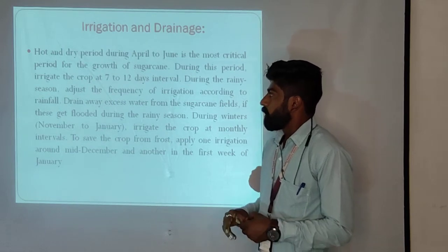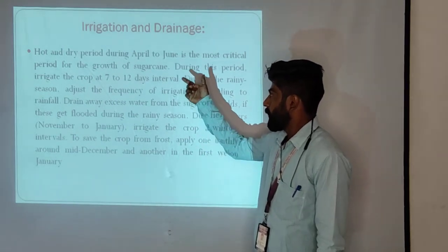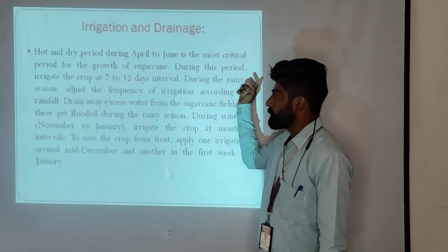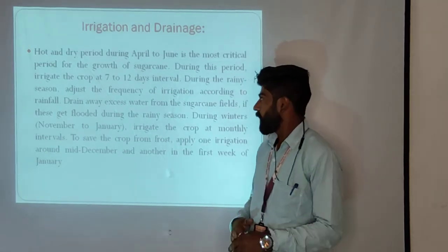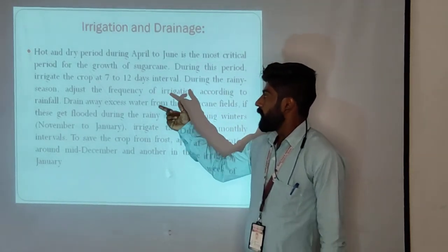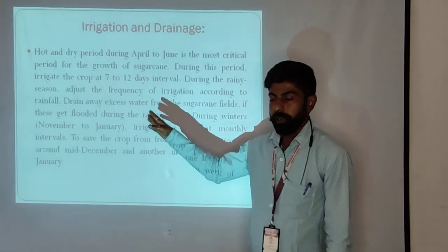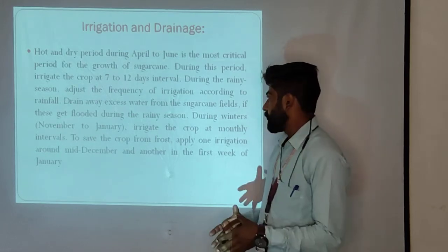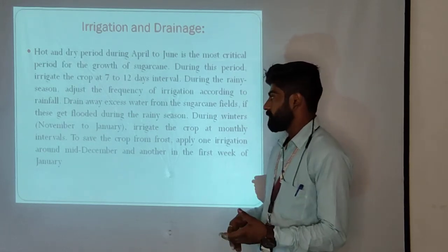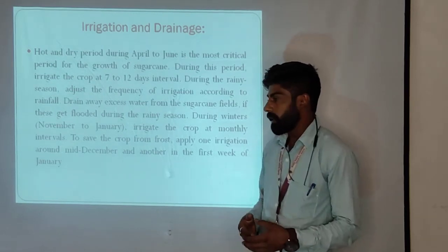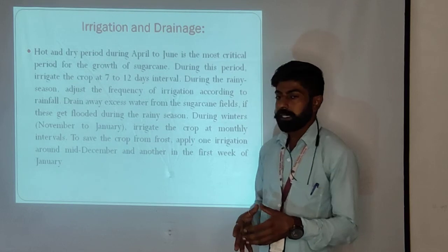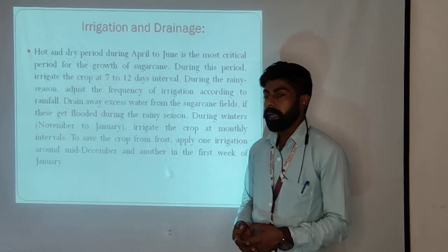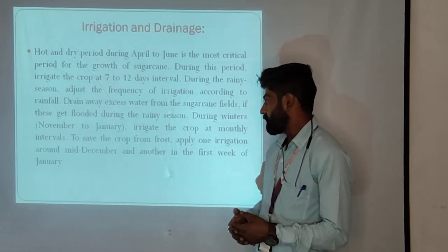For irrigation and drainage: April to June is the most critical period for growth of sugar cane. During this period, irrigate the crop at 7 to 12 days interval. During the rainy season, adjust the frequency of irrigation according to rainfall and drain excess water from the sugar cane field if it gets flooded. During winter, November to January, irrigate the crop at monthly intervals. To save the crop from frost, apply one irrigation around mid-December and another in the first week of January.